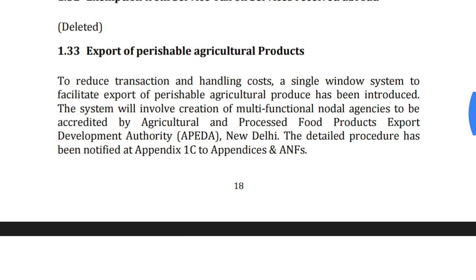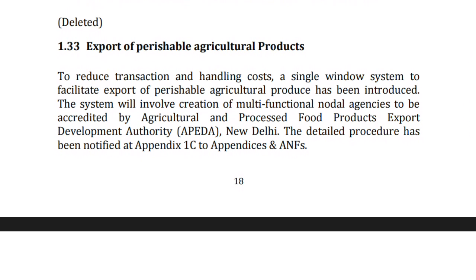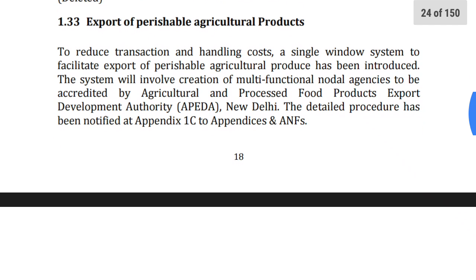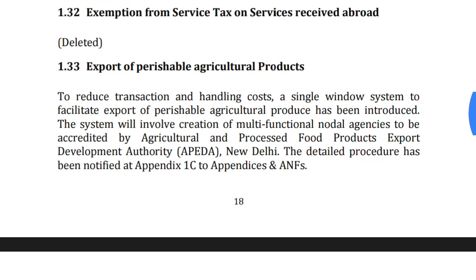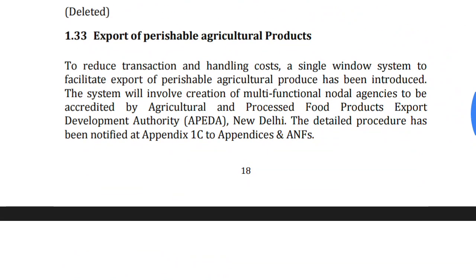Export of Perishable Agriculture Products: the government has taken many initiatives to promote agriculture products because agriculture is very important for Indian exporters. India does not need to import raw materials from other countries for agricultural goods — all raw materials are available domestically. These goods and products will improve India's economic status and increase economic growth.